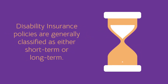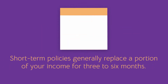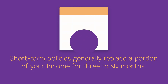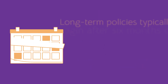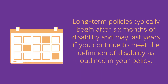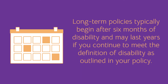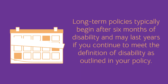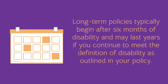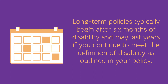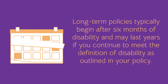Disability Insurance policies are generally classified as either short-term or long-term. Short-term policies generally replace a portion of your income for 3 to 6 months. Long-term policies typically begin after 6 months of disability and may last years if you continue to meet the definition of disability as outlined in your policy.